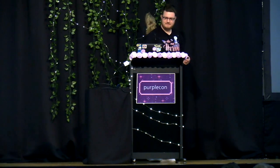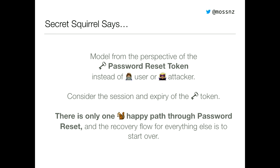And with this recommendation, our session comes to an end, and it's time for everybody's favourite segment: Secret Squirrel Says. Secret Squirrel says: model your password reset flows from the perspective of the password reset token instead of the user or an attacker. Because in modelling in this fashion, you can think of system behaviours that are both helping the legitimate persona and stymieing the attacker persona without getting into a lot of overcomplicated states of mind. Consider the session and expiry of the password reset token. And there is only one happy path through password reset, and the recovery flow for everything else is to start over again. Thank you, Purplecon.